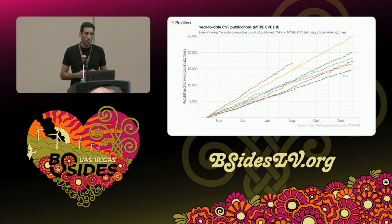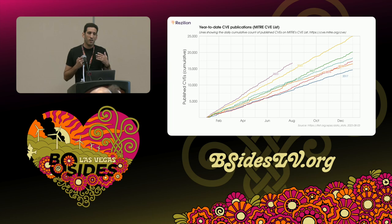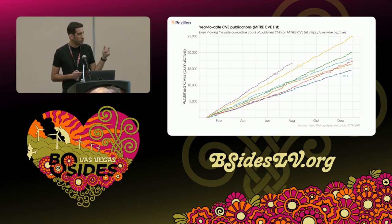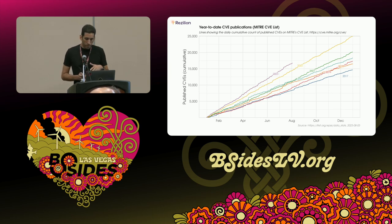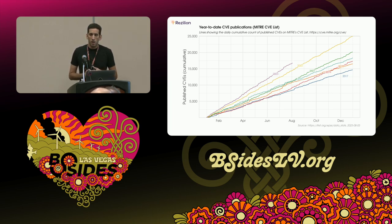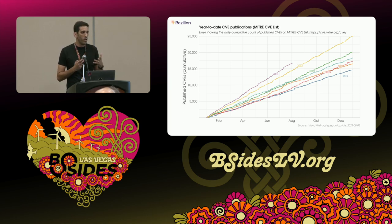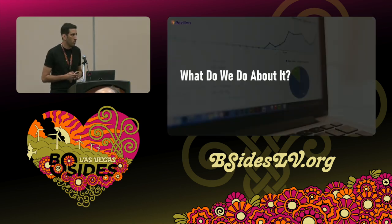One of those risks comes in the form of vulnerabilities. The amount of vulnerabilities is constantly rising — this data is up to August 2023, and we're already about 2,000 vulnerabilities over the publication rate from the previous year. This isn't going to change anytime soon. Exploitation of known vulnerabilities remains one of the major attack vectors for initial access, and organizations simply don't seem to keep up with remediating or patching all of these vulnerabilities.